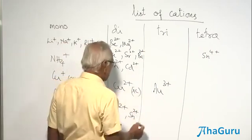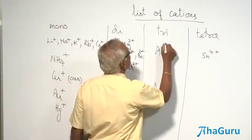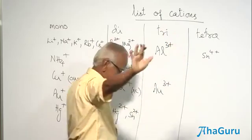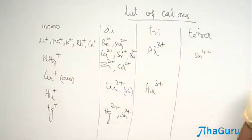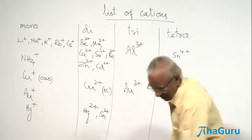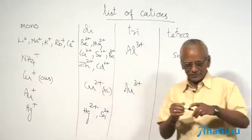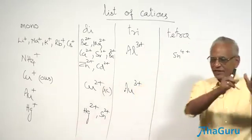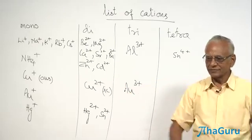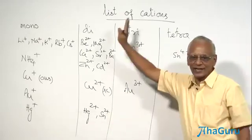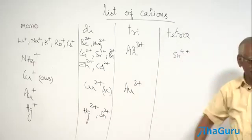And besides this, you have got Al3+. That is all. I am not going to add anything else to this. You have the very big list of anions. I am going to give you a permutation combination. One cation from here and one anion from there.